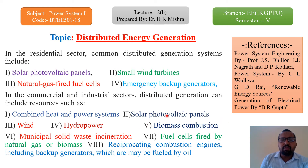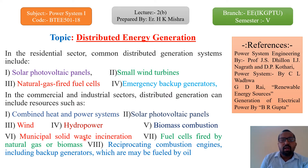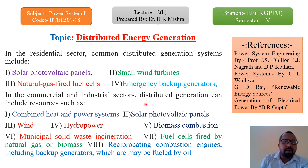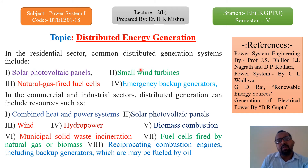Biomass combustion is a government-funded project in rural areas where animal dung and bio-waste like Jatropha are used to generate electricity. Municipal solid waste incineration is used in Delhi and various places, where sewage waste is segregated to extract gases and generate power. Fuel cells fired by natural gas or biomass are also used. Additionally, reciprocating combustion engines, including backup generators fueled by oil, serve as distributed generation in both residential and industrial areas.